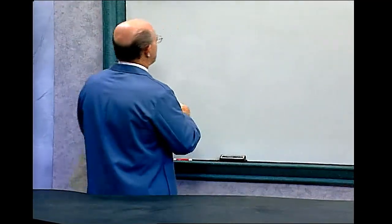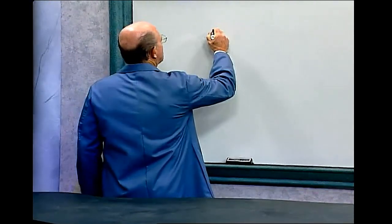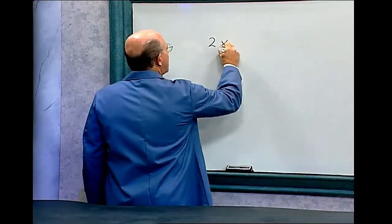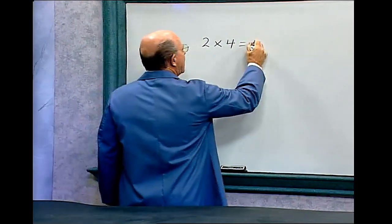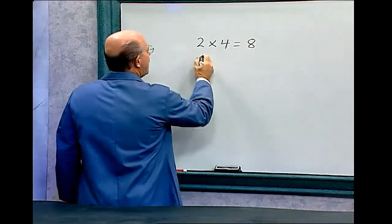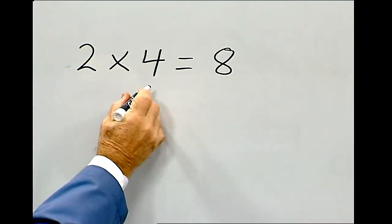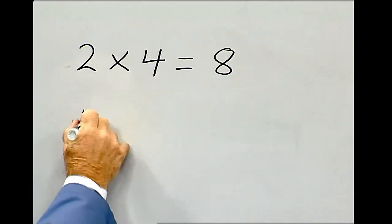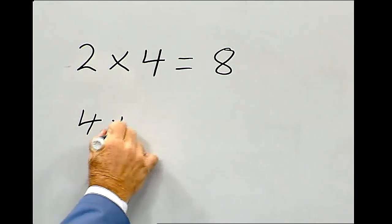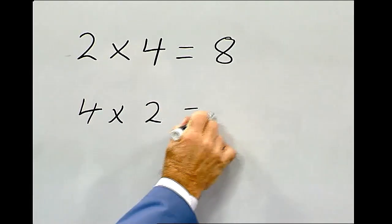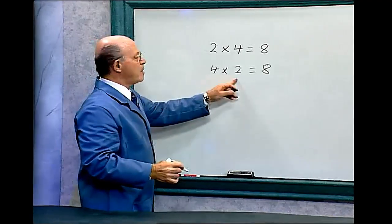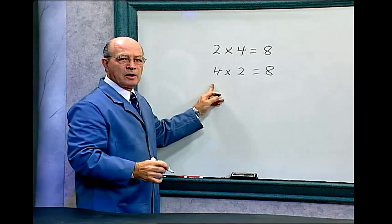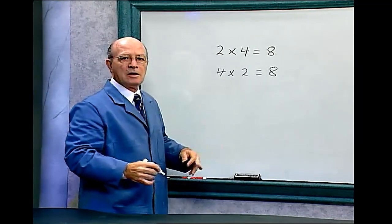For instance, if you multiply 2 times 4, that equals 8. And we can reverse these numbers in multiplication: 4 times 2 also equals 8. So the order of the numbers in multiplication has no effect on the answer.